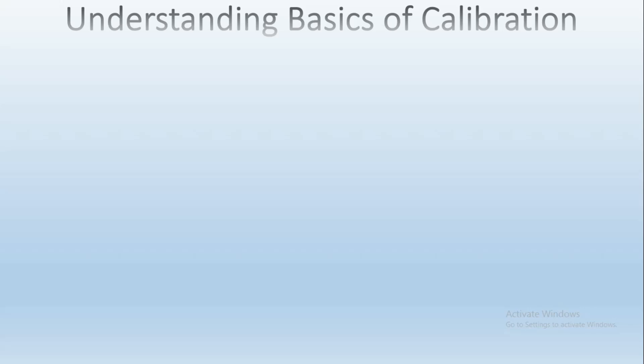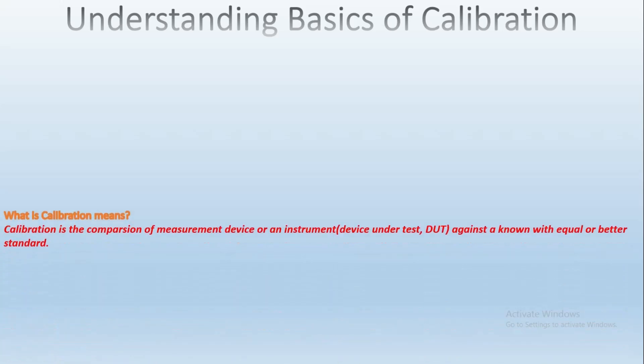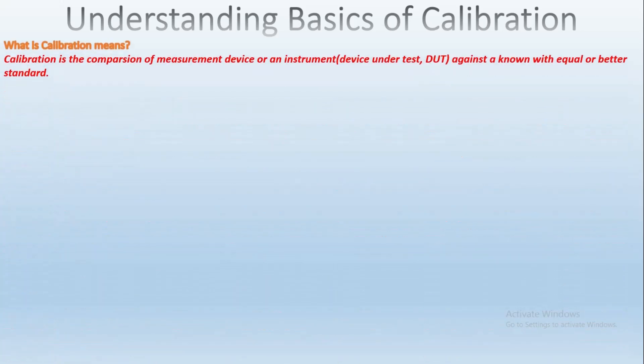Now we will know what calibration means. Calibration is the comparison of a measurement device or an instrument — that is the device under test, we will call it as DUT — against a known standard with equal or better accuracy. The standard in a measurement is considered to be more correct of the two.